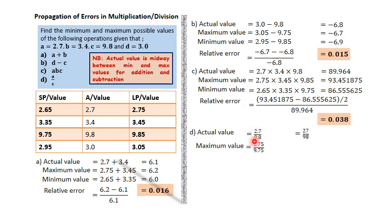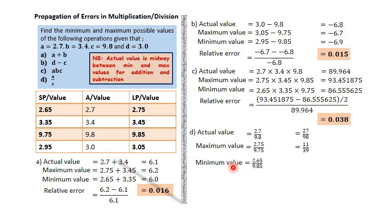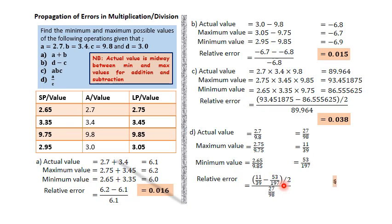Part D: a divided by b, which is 2.7 ÷ 9.8. The actual value is 2.7 ÷ 9.8. For the maximum value of a division, the numerator should be as large as possible and the denominator as small as possible: 2.75 ÷ 9.75. The minimum value uses the smaller numerator and larger denominator: 2.65 ÷ 9.85. Relative error is computed the same way as multiplication: (max − min) ÷ 2 ÷ actual = 0.024.